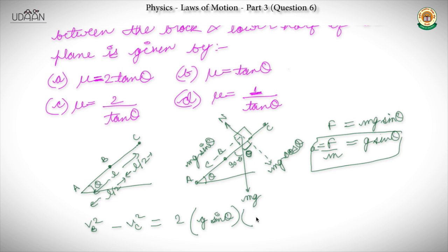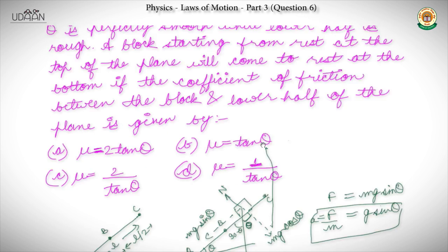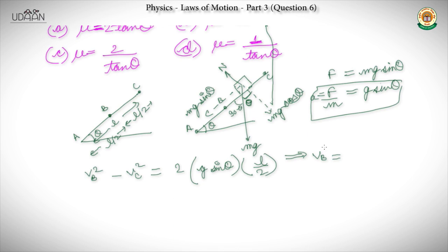The block starts from rest, so Vc equals zero. Using kinematics, Vb squared equals g·sin θ·L. So the value of Vb will be the square root of g·sin θ·L. This is equation 1.